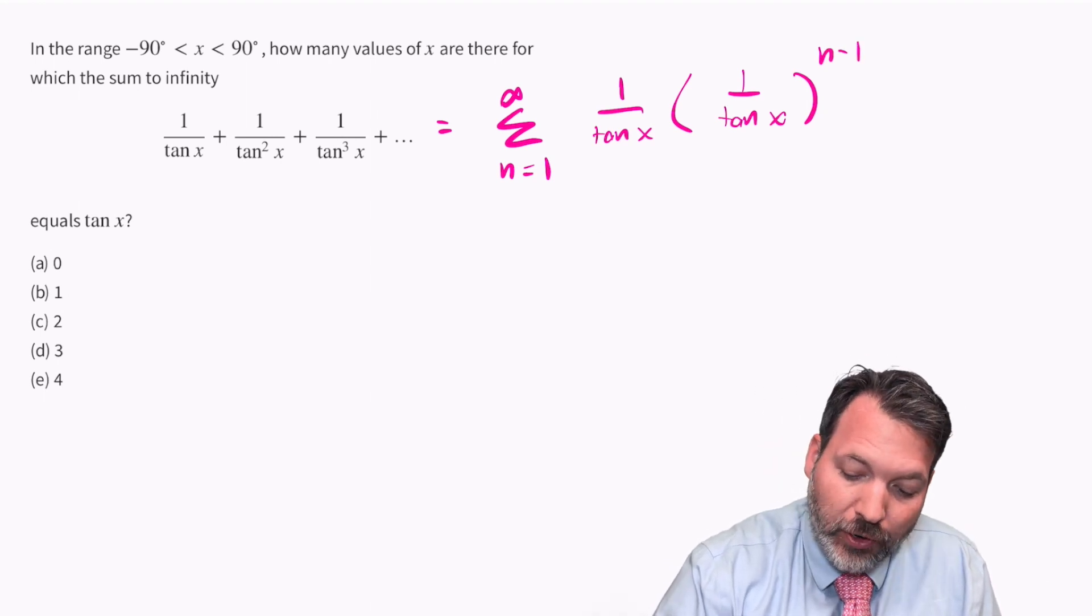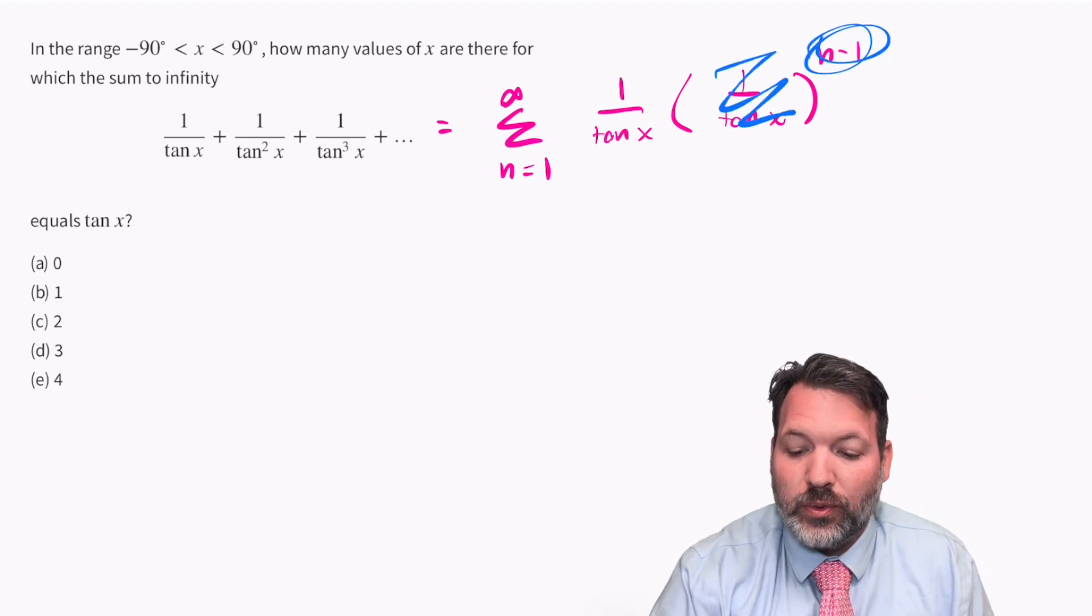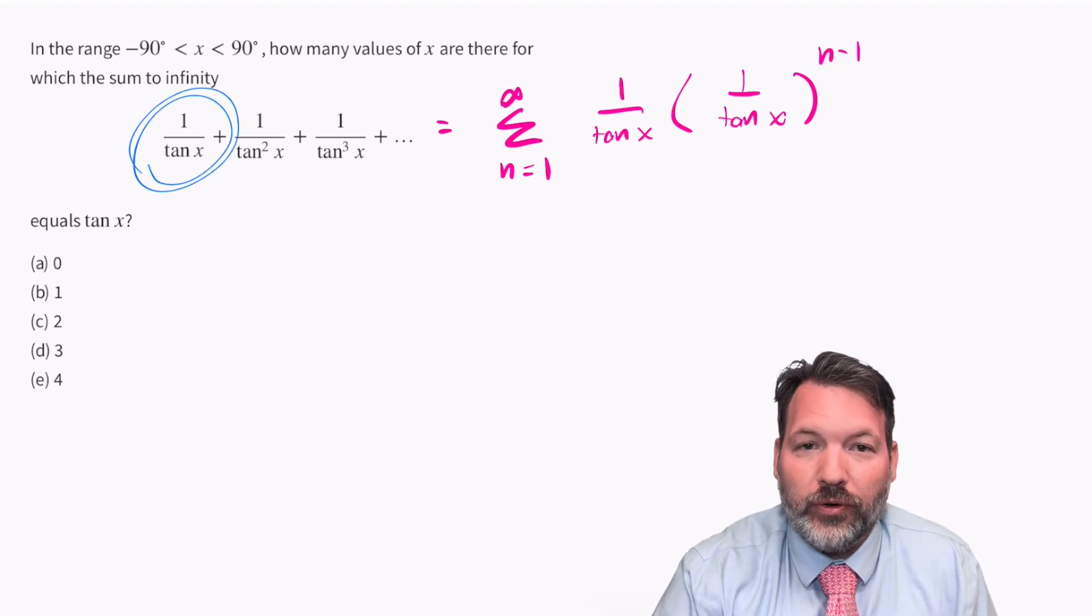In other words, for our first term, when we plug in n equals one, this power would be zero, meaning we wouldn't have used the ratio at all just yet. And we just have our initial value of 1 over tangent x.